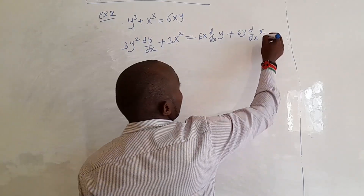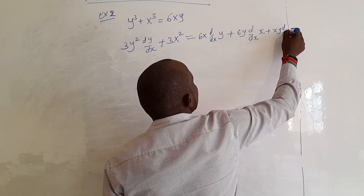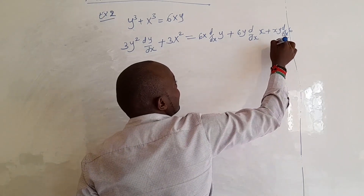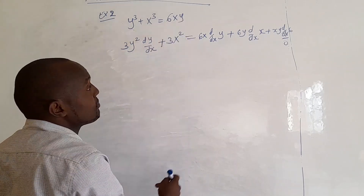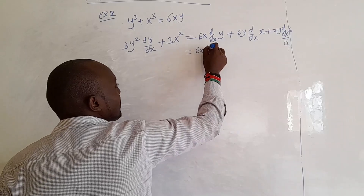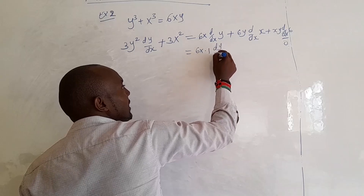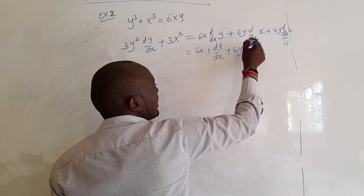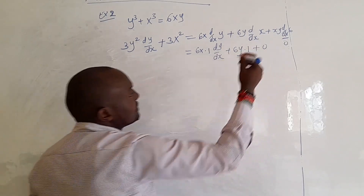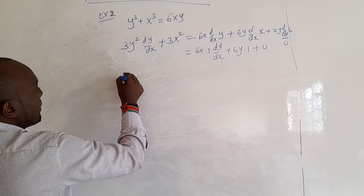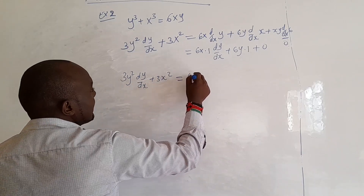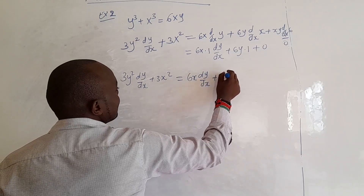Using the product rule on 6xy: we hold x constant and differentiate y, getting 6x times 1, but because we differentiated y we add dy/dx. Then we hold y constant and differentiate x, getting 6y times 1. The constant 6 on its own differentiates to zero so we ignore that. So we have 3y squared dy/dx plus 3x squared equals 6x dy/dx plus 6y.